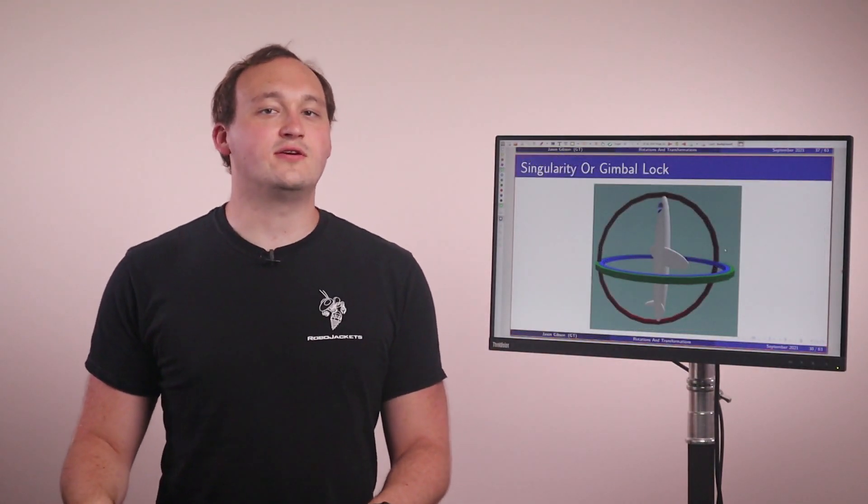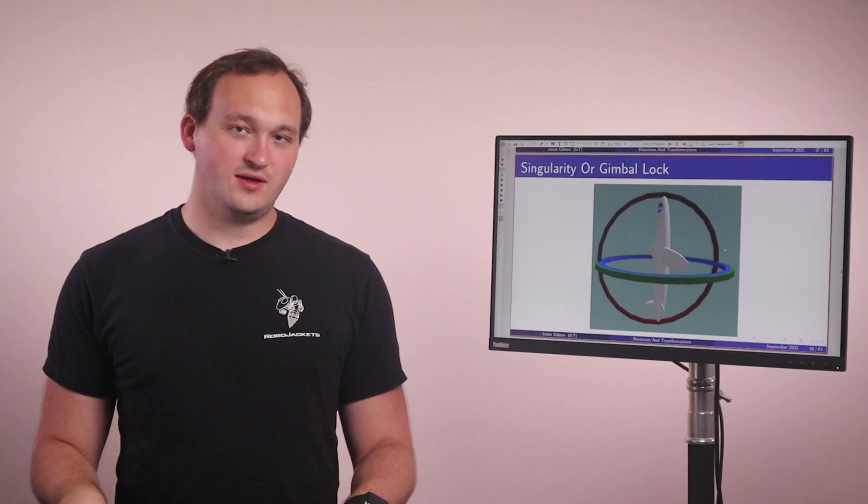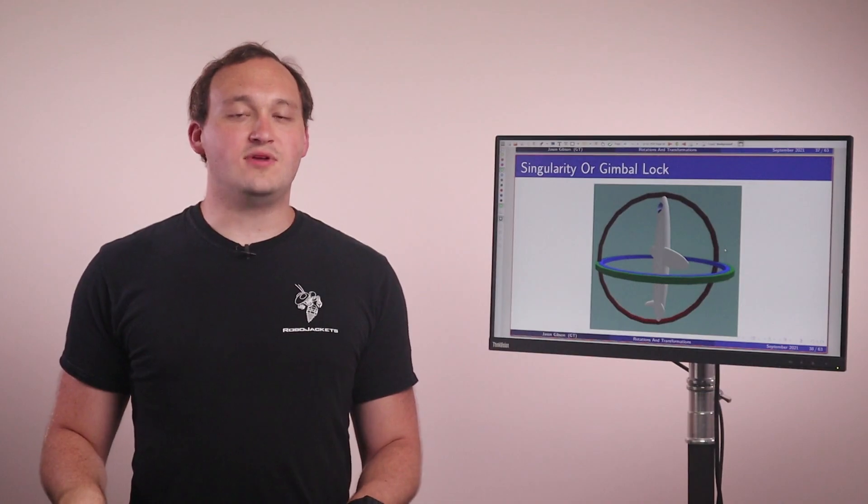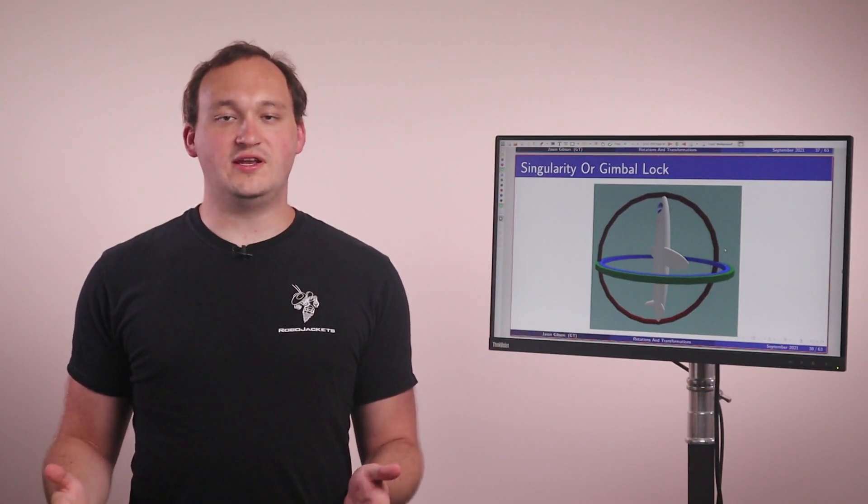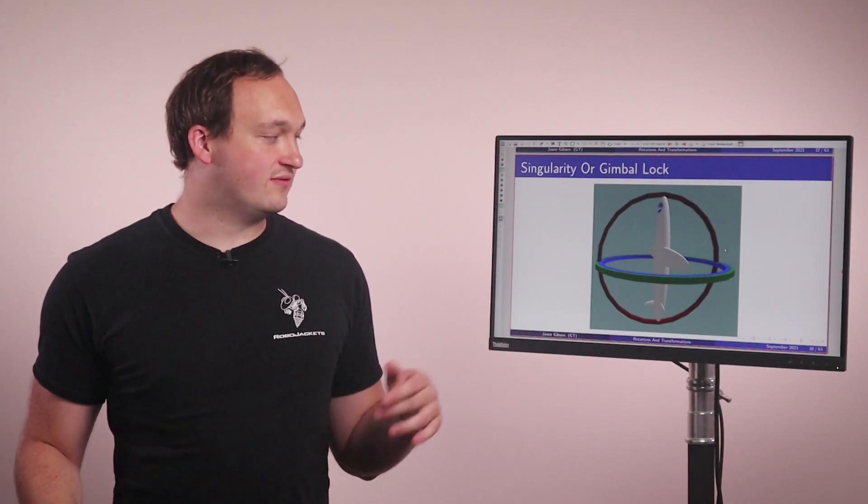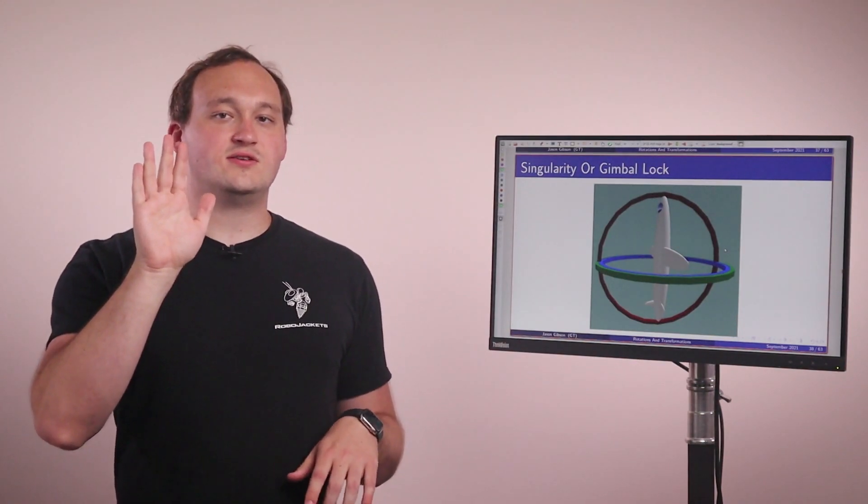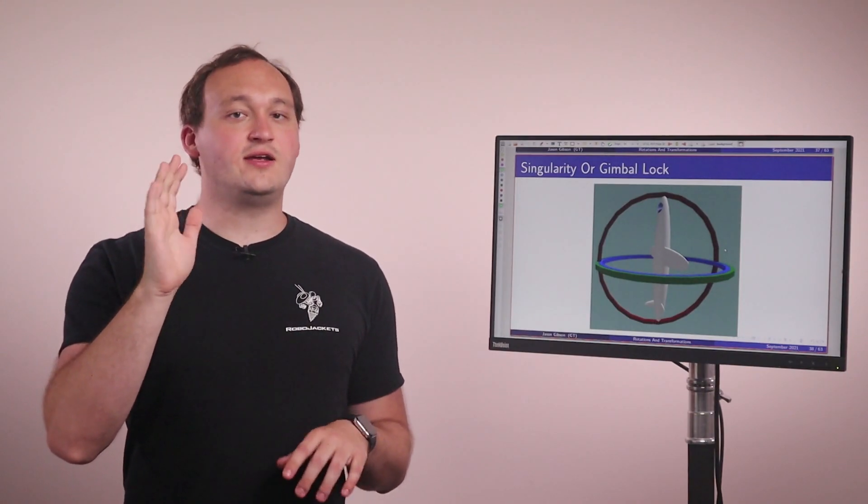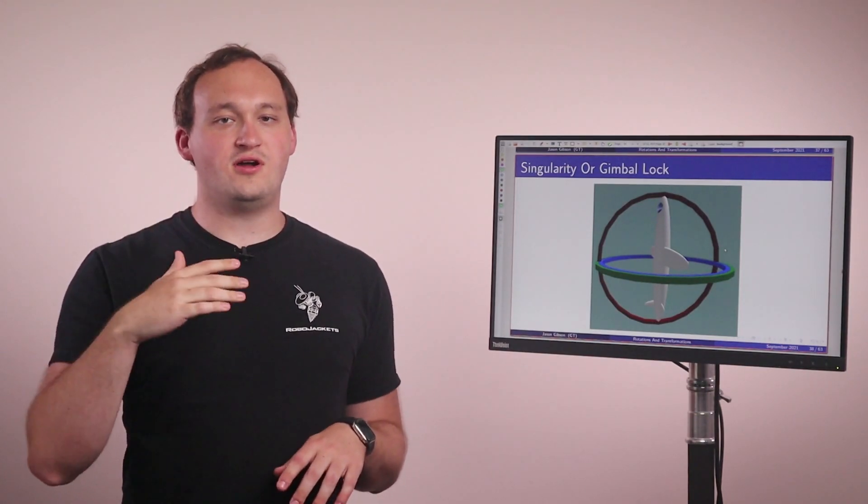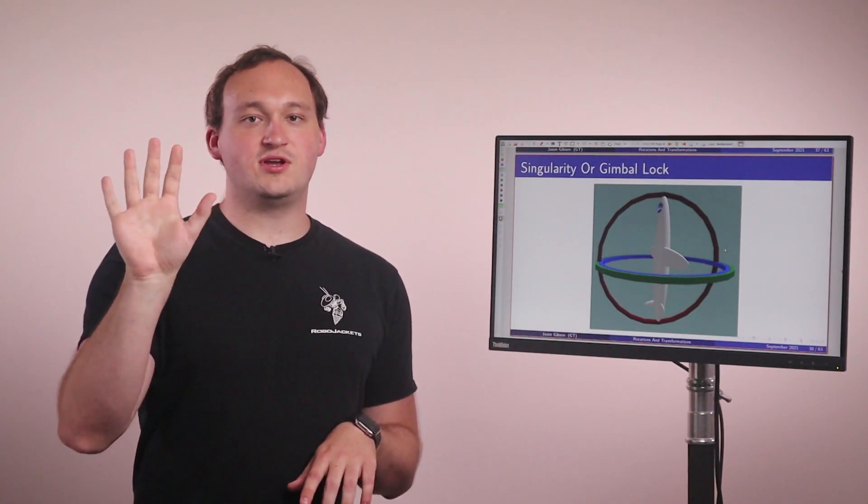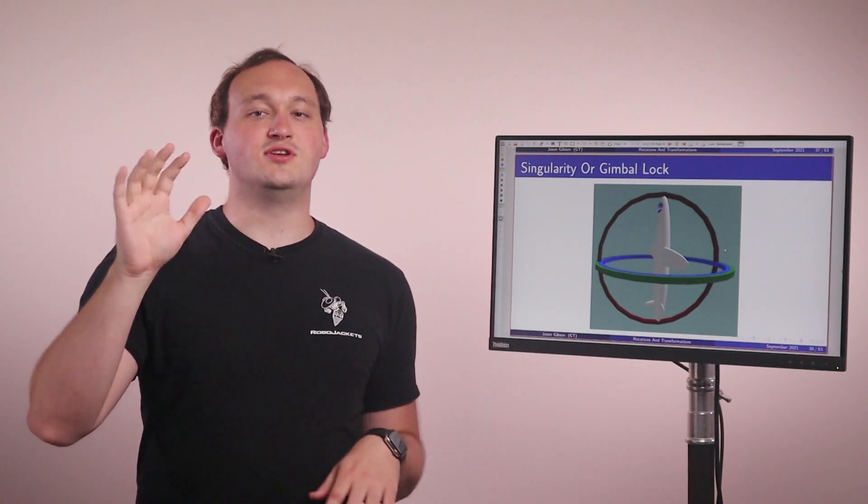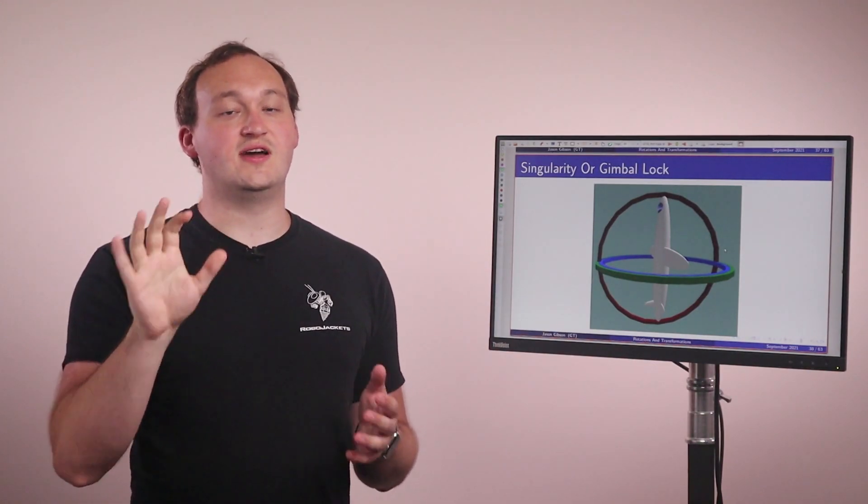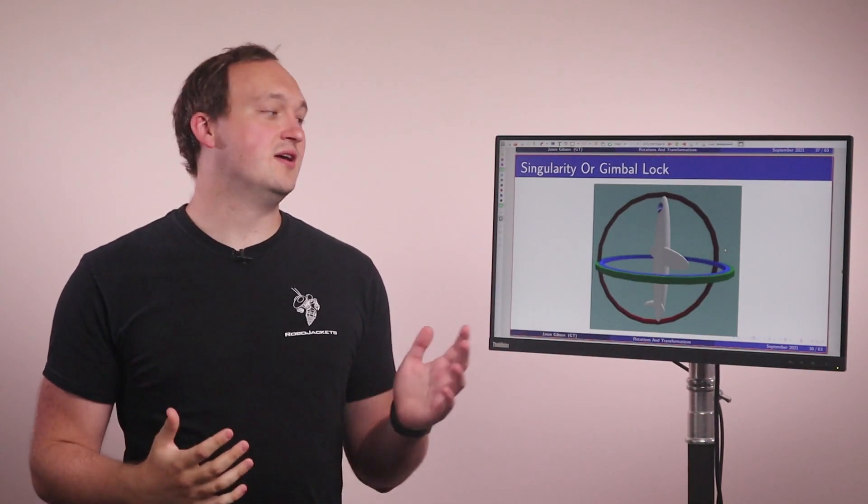A large issue with Euler angles is this thing called the Singularity or Gimbal Lock. And essentially what that means is that in certain critical points, you have ambiguity in what is rotating. So as we can see here, a great example of that. So we take our plane and we pitch it up 90 degrees. When that happens, our blue and green axes are aligned, which stands for our roll and our yaw. So by changing a roll, I can compensate that with a change in yaw and end up at the same orientation. So it's essentially unclear which one is changing and which one is not changing. So there are multiple solutions to this orientation.